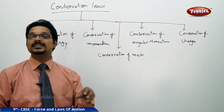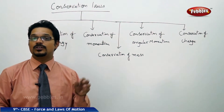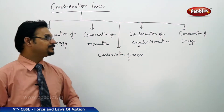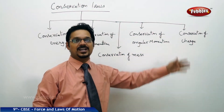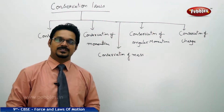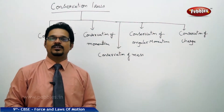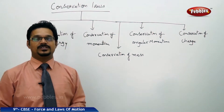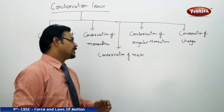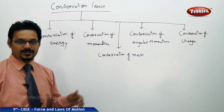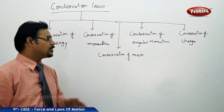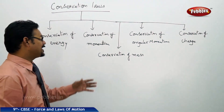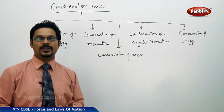Next is conservation of angular momentum, where angular momentum remains constant when no external torque acts on the body — applicable in rotatory motion. Conservation of charge means total charge remains constant; you can have high charge somewhere, low charge somewhere, positive or negative charge, but total charge always remains constant. In our class, we are only discussing conservation of momentum.